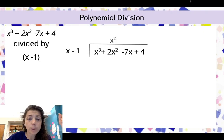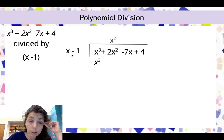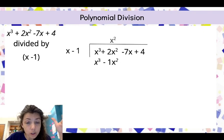That is the division. Now I'm going to multiply x² times this factor. So I'm going to have x² times x is x³. x² times negative 1 is negative 1x², or just negative x².